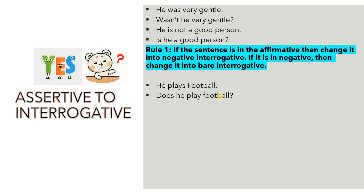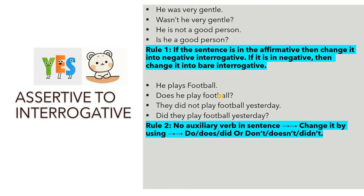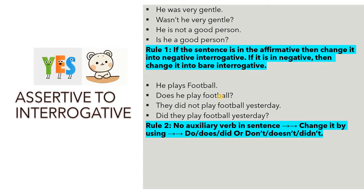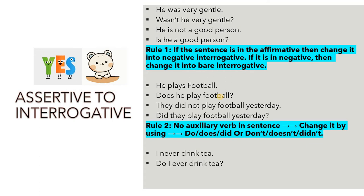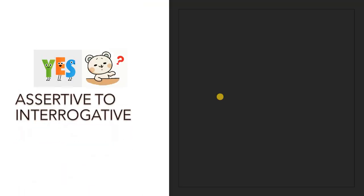'He plays football' becomes 'Does he play football?' — 'does' is the understood auxiliary. 'They did not play football yesterday' becomes 'Did they play football yesterday?' When there is no auxiliary, use do, does, or did — or don't, doesn't, didn't — depending on the tense of the sentence. 'I never drink tea' becomes 'Do I ever drink tea?' — 'never' is replaced by 'ever.'